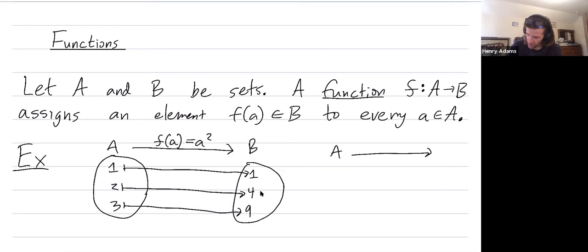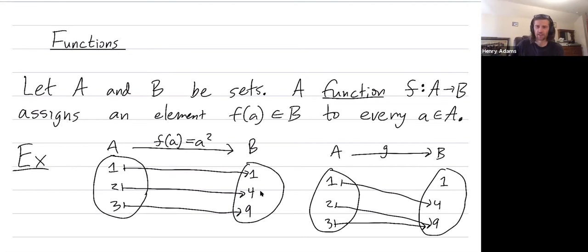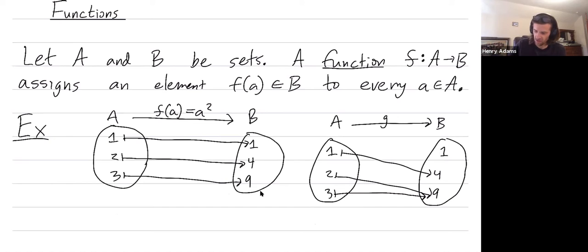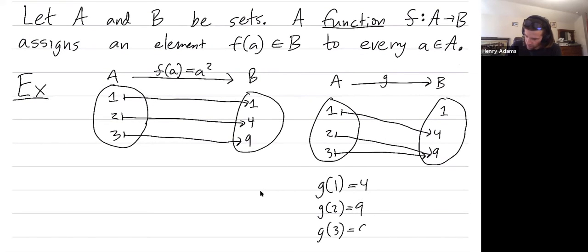You could have a different function from A to B — maybe I'll call it g — that's not even given via a formula. Maybe it's just given via a picture. Maybe I want to send one to four, two to nine, and three to nine. That's also a perfectly valid function. It doesn't have a pretty formula like a squared, but it's still a function. So g sends one to four, two to nine, and three to nine, whereas f sends one to one, two to four, and three to nine.